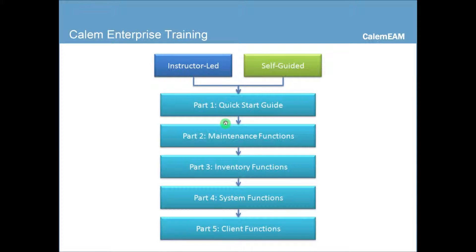The first part talks about the overview of Calum Enterprise and clients, and the second part is the maintenance functions, and part three is inventory functions, and part four is about the system functions for Calum Enterprise, and the last part is the client functions.